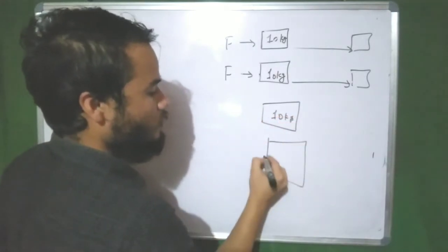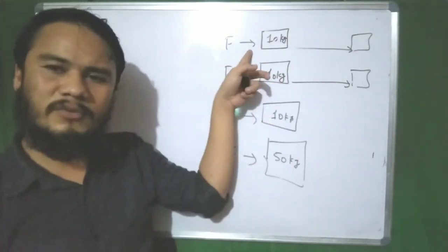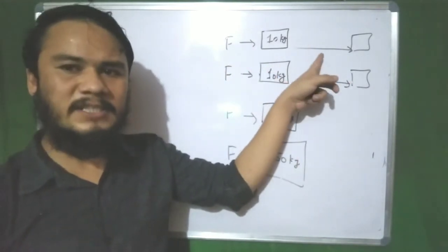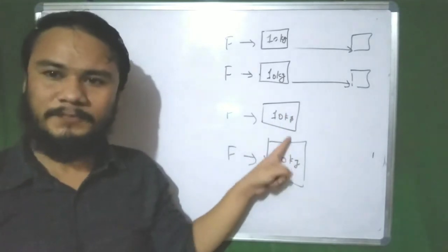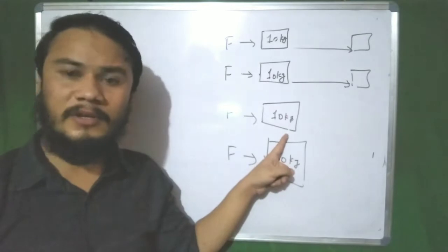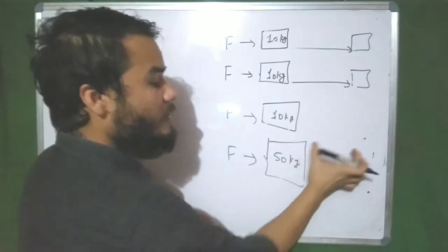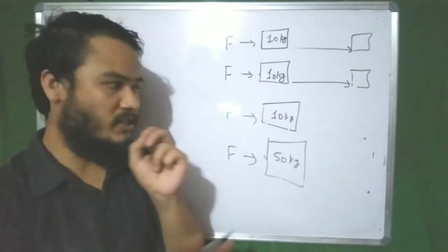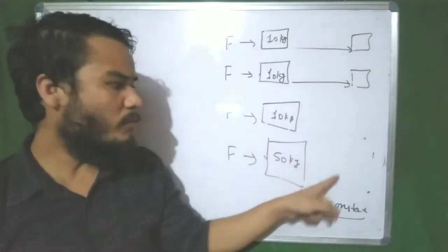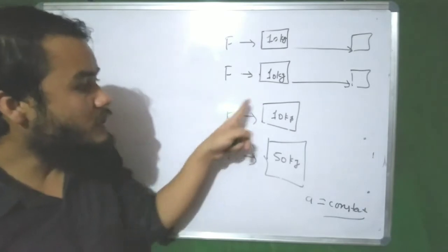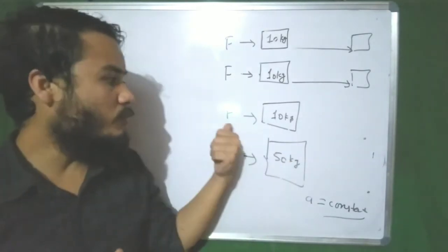With equal mass and equal force applied, equal distance will be covered by those objects — meaning they gain equal acceleration. We have to apply less force for less mass and more force for more mass. There is a direct relationship between force and mass.